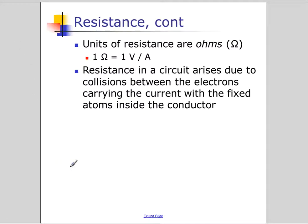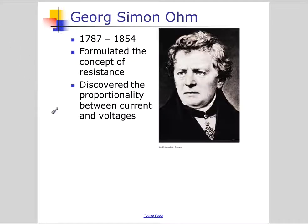Resistance is measured in a unit called the ohm. A little omega — Greek letter omega — is used to abbreviate ohm. An ohm is equal to one volt per amp. Resistance arises due to the collisions between the electrons carrying the current with the fixed atoms inside the conductor that they keep bumping into. And here he is, the man himself, Georg Simon Ohm.